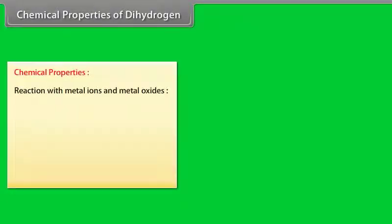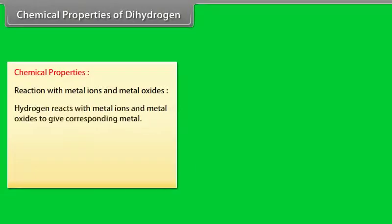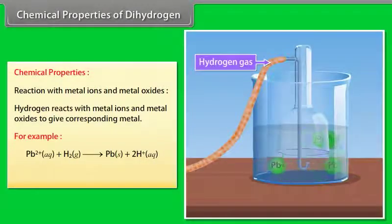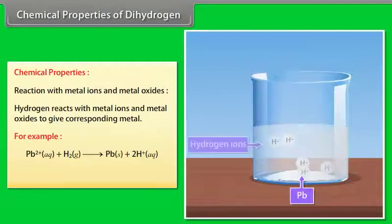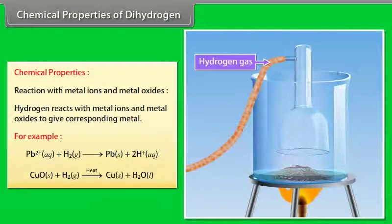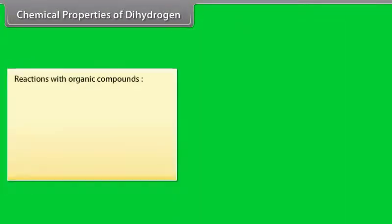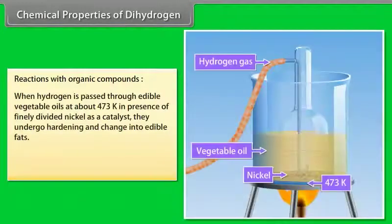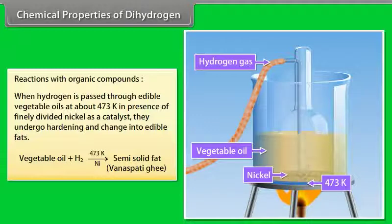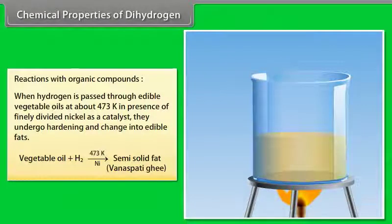Chemical properties of dihydrogen. Reaction with metal ions and metal oxides. Hydrogen reacts with metal ions and metal oxides to give corresponding metal. For example. Reactions with organic compounds.